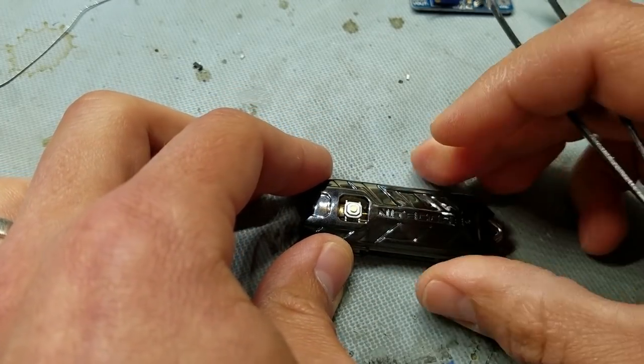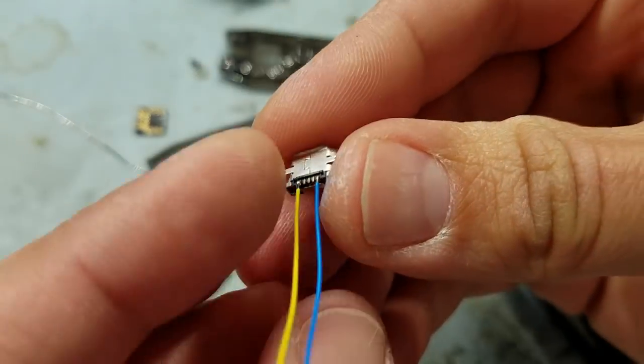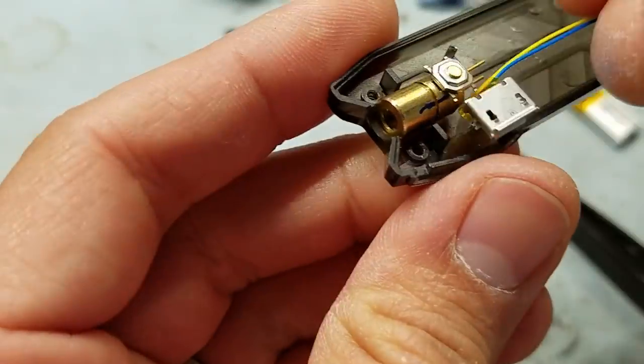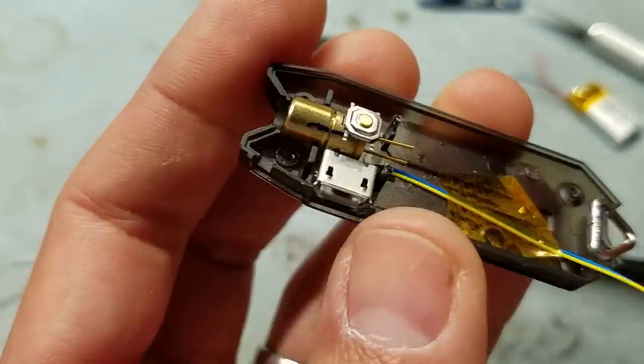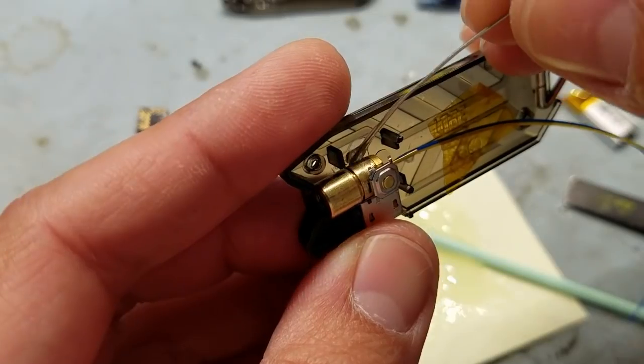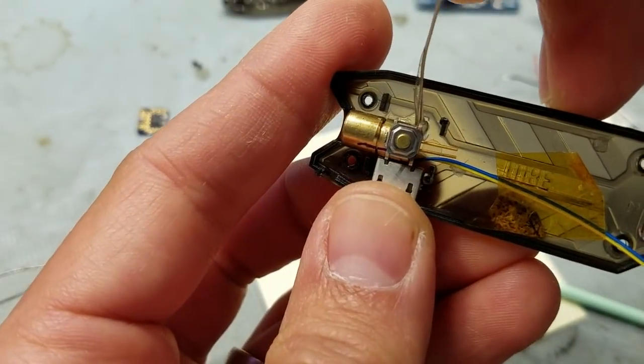I temporarily mount everything with super glue, which is just a temporary fixation before the epoxy goes on. The switch mounts on top of the laser diode optics, and I also prepare the USB jack. Once those three primary components are in there, I can begin epoxying everything into place so it's mounted very firmly.